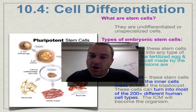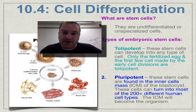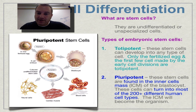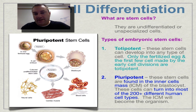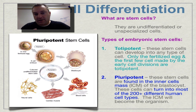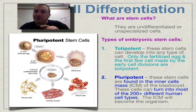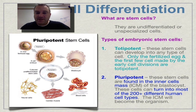So first of all, what is a stem cell? A stem cell is an undifferentiated, unspecialized cell — it's a cell that can become any of the 200 different types of cells that we have in our body. Now, not all stem cells are the same; stem cells come in two flavors.